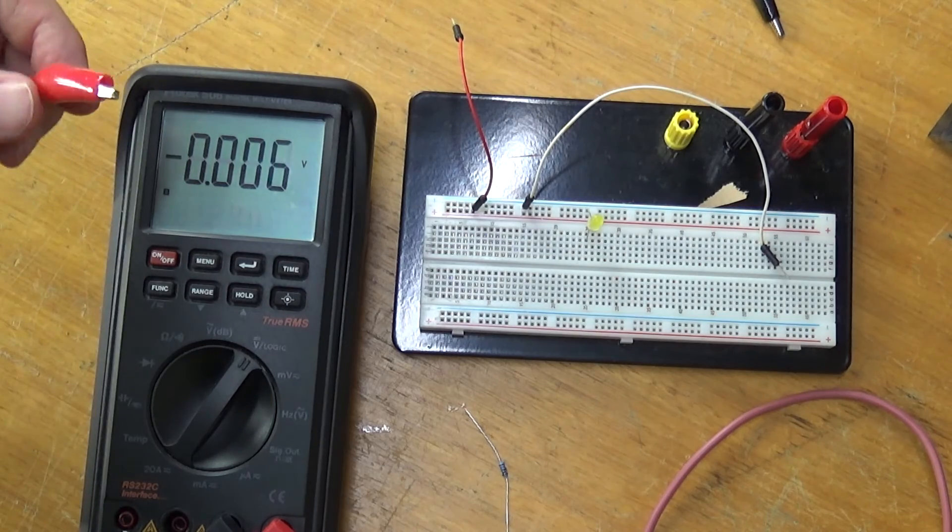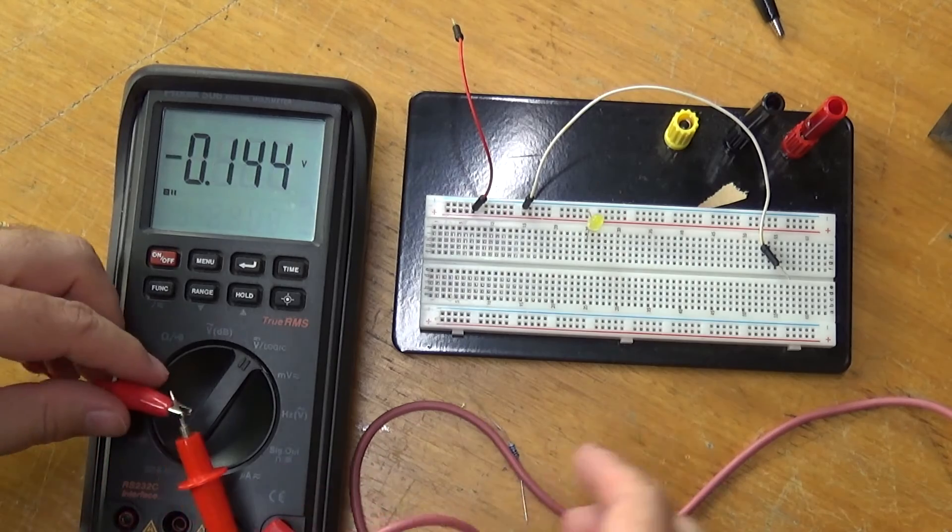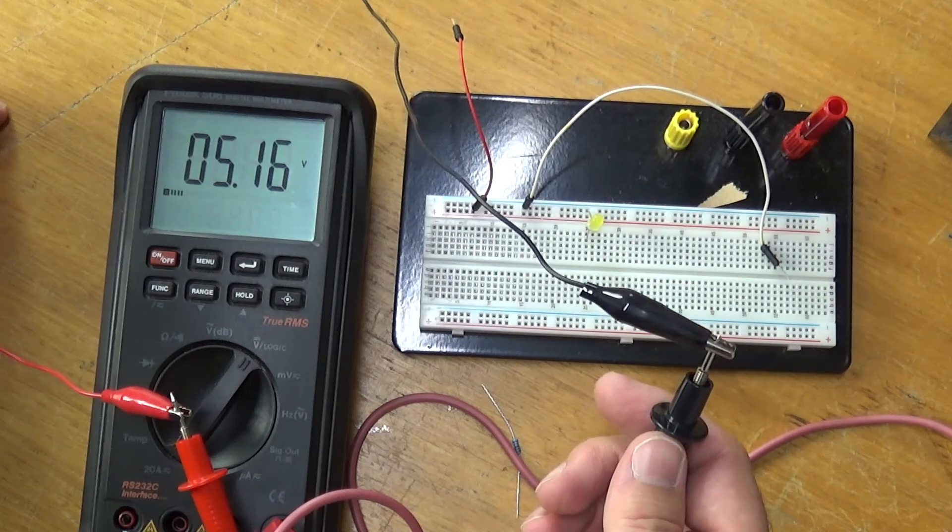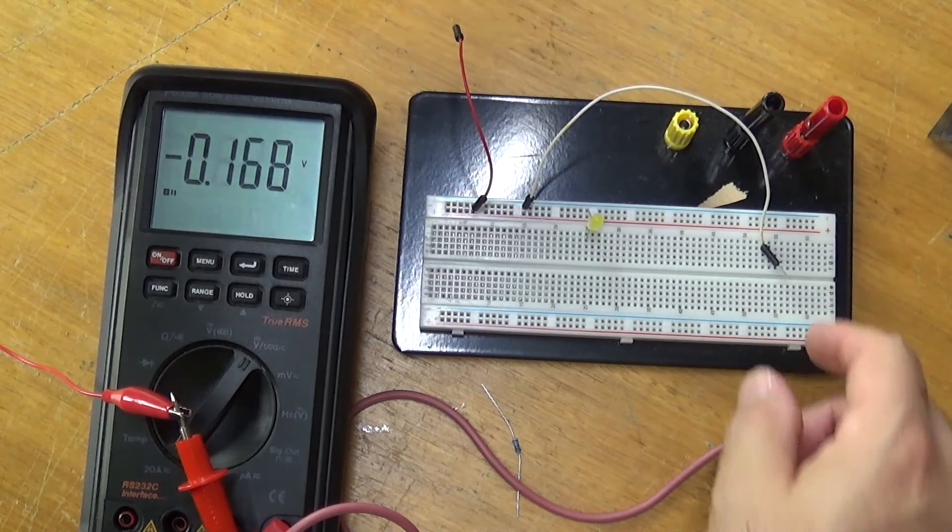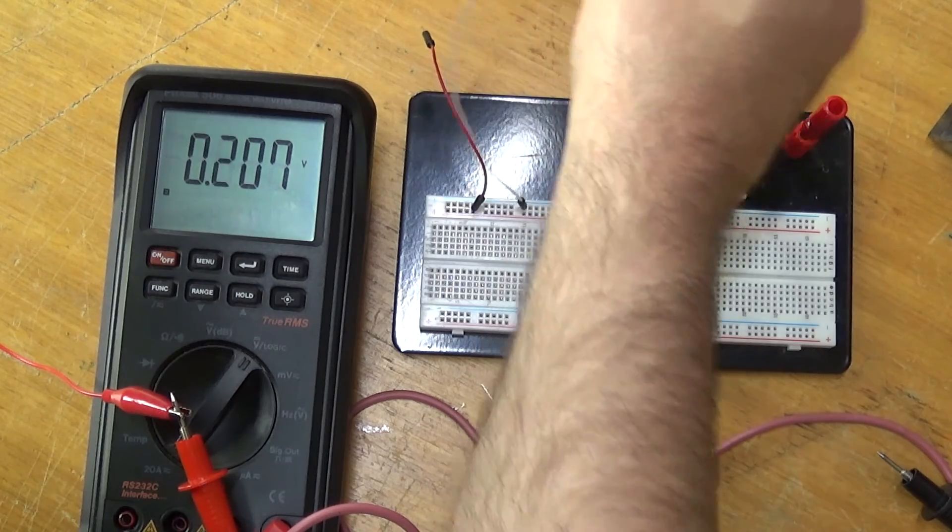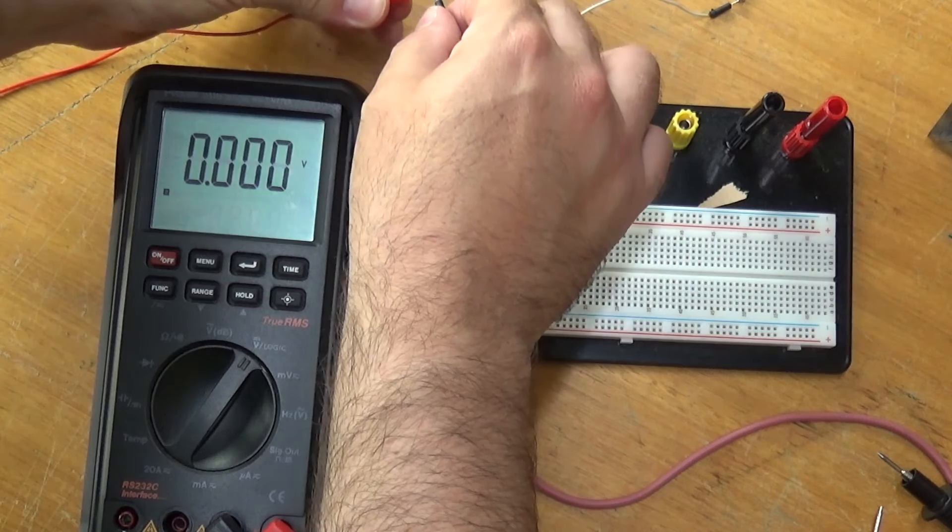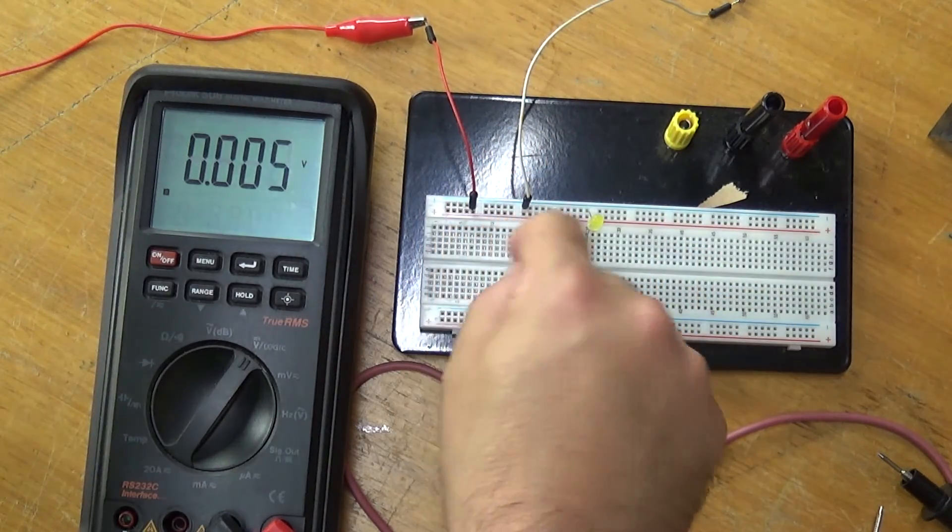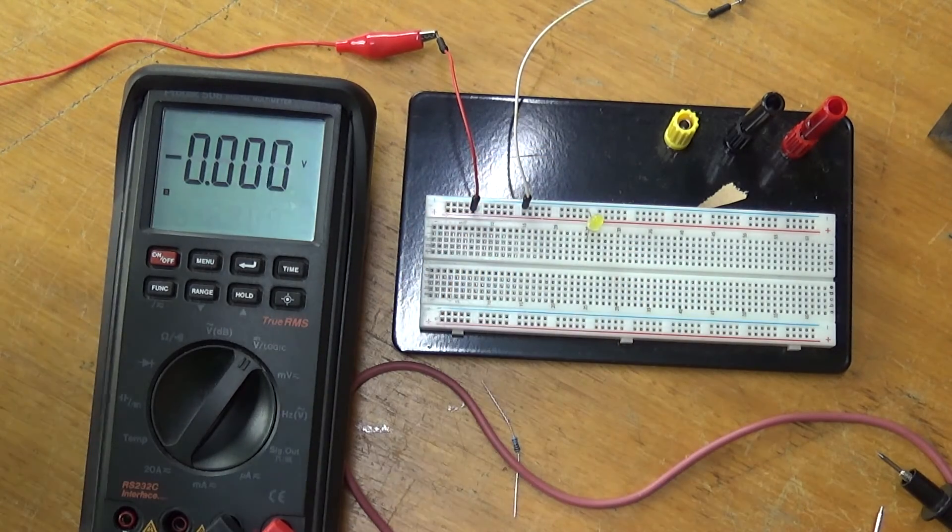Okay, I have my power supply turned on and set to 5 volts. So we'll just check that we're getting 5 volts on the multimeter. Okay, so 5.16 volts, that's close enough. So I'll hook that up to the power rail on the breadboard. Okay, there we go, so we've got suitable 5 volts going to the positive and negative power rail on the breadboard.